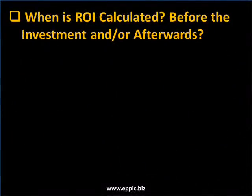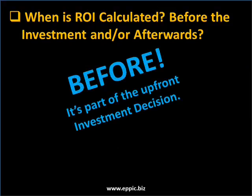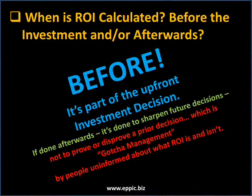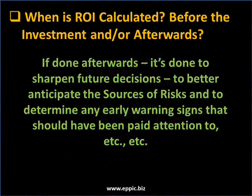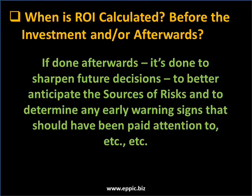When is ROI calculated — before the investment, and or afterwards? Before, it's part of the upfront investment decision making: should we go with Opportunities 1 and 2, or just with 3? If it's done afterwards, it's done to sharpen future decisions, not to prove or disprove a prior decision — which is gotcha management by people uninformed about what ROI is and isn't. If done afterwards, it's done to sharpen future decisions, to better anticipate the sources of risk, and to determine if there were any early warning signs that could have and should have been paid attention to.